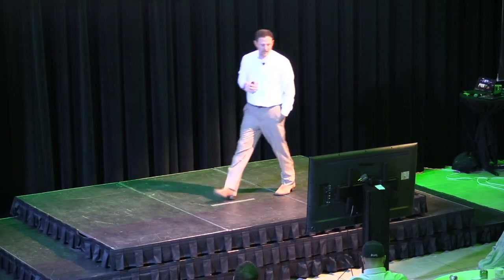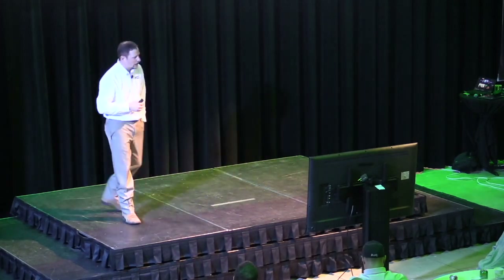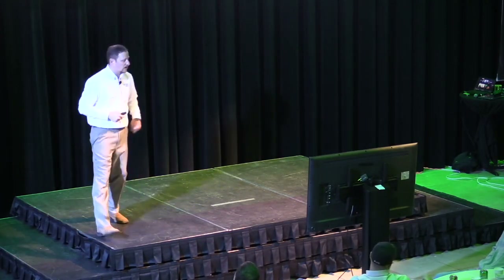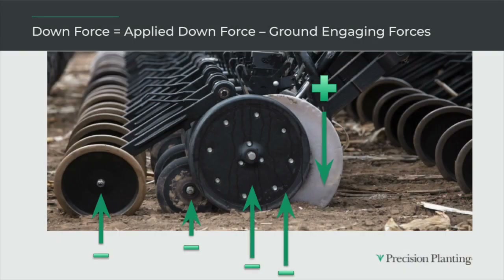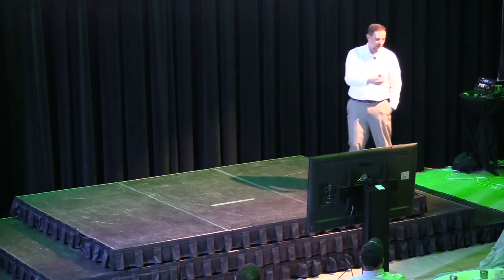No different than the planter — as we move through the field, there are forces pushing up and down on the row unit. Moisture content changes from day one of planting to the last day, and even from morning to afternoon. Temperature changes, soil types change, and speed changes — because you certainly don't plant at the same speed day one when carefully setting the drill as on the last day when you haven't slept in three days and just want to be done. We know those forces are going to interact.